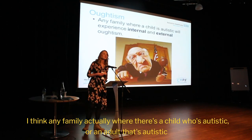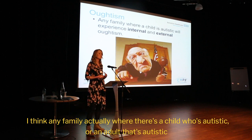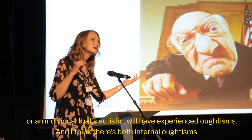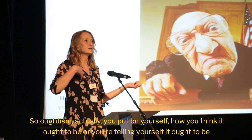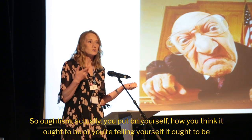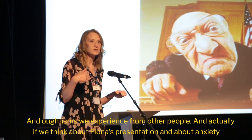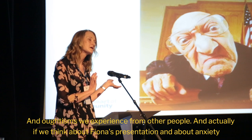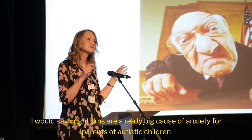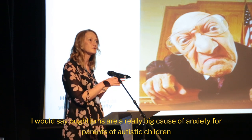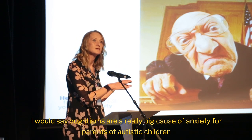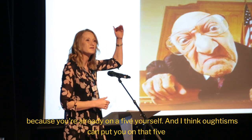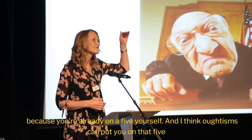I think any family where there's a child, adult, or individual that's Autistic would have experienced Oughtism. There are both internal Oughtisms — what you put on yourself, how you think it ought to be — and Oughtisms you experience from other people. Thinking about anxiety, I would say Oughtisms are a really big cause of anxiety for parents of Autistic children. If they make you more anxious, there's more chance you'll struggle to manage your child's anxiety because you're already at a five yourself.